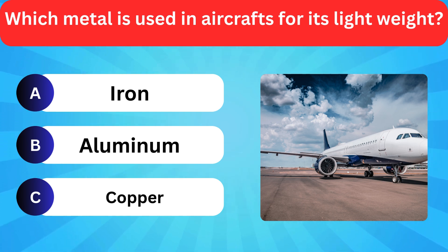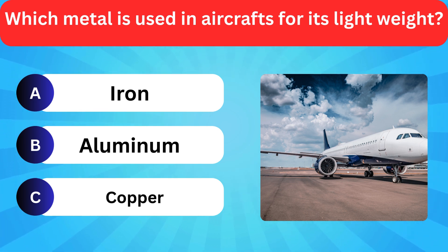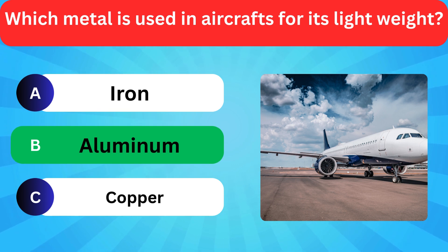Which metal is used in aircraft for its light weight? Options: Iron, Aluminium, Copper. Correct answer is aluminum.